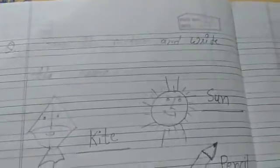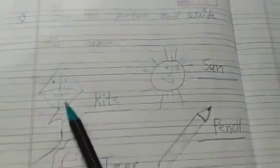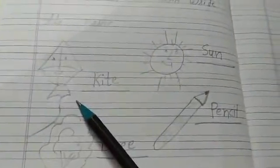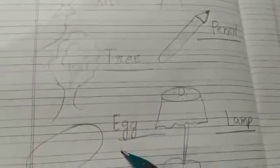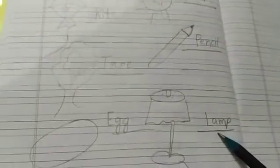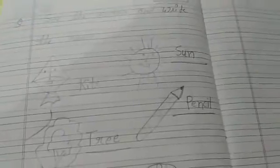Write down today's date. And now we will draw the pictures: kite, tree, egg, sun, pencil, lamp. Do neat and clean writing in your copy.